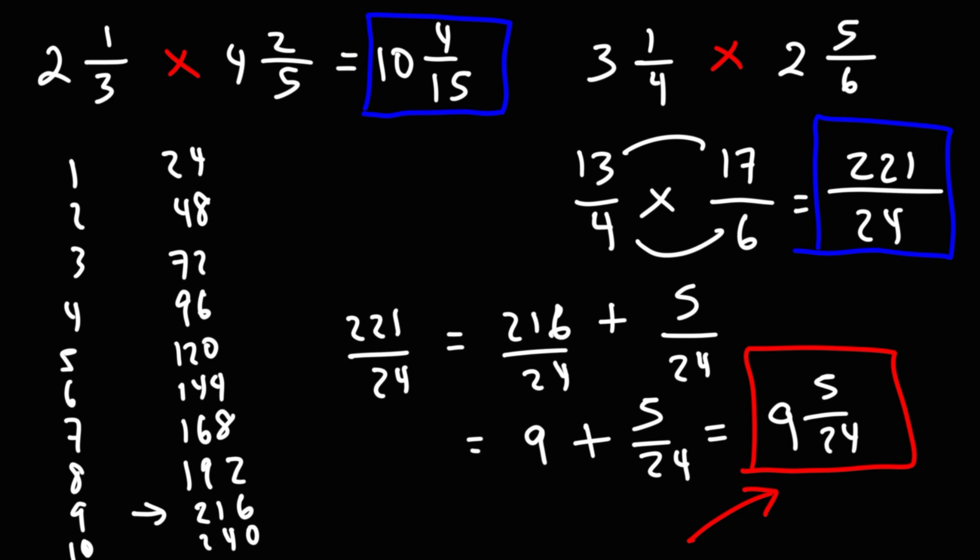So that's how you can multiply two mixed numbers together. It's by converting each mixed number into an improper fraction, and then multiply those improper fractions by multiplying across, and then convert the final answer back to a mixed number.